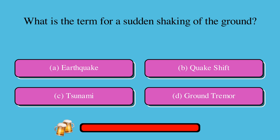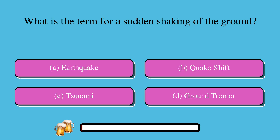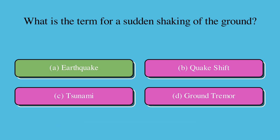What is the term for a sudden shaking of the ground? A. Earthquake, or B. Quake shift, or C. Tsunami, or D. Ground tremor? The correct answer is A. Earthquake.